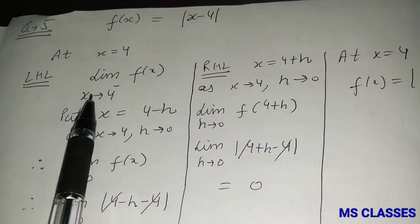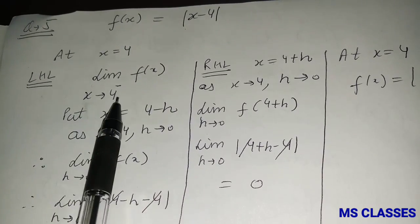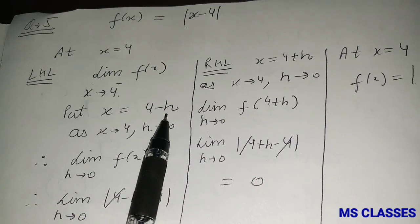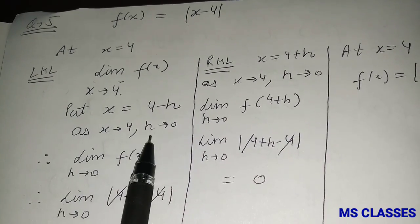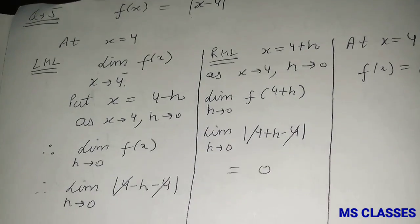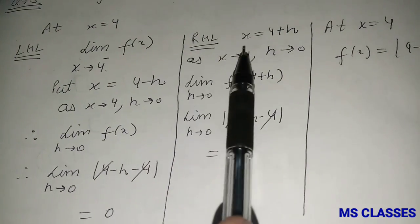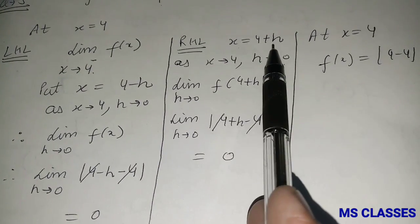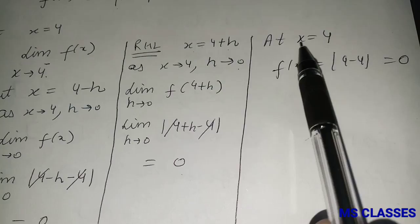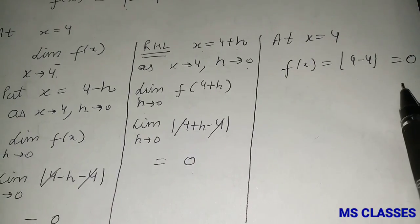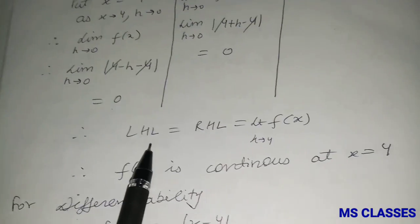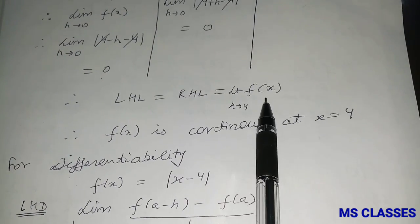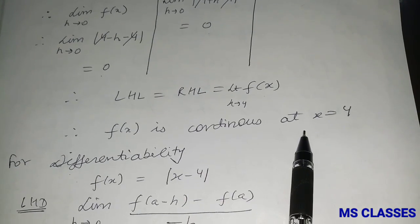For checking continuity at x = 4, we check the left-hand limit first. For x → 4⁻, put x = 4 - h, so as x → 4, h → 0; after substituting we get 0. Similarly, for the right-hand limit, x → 4⁺, put x = 4 + h, h → 0; we get 0. At x = 4, f(4) = 4 - 4 = 0. Since left-hand limit = right-hand limit = f(4) = 0, f(x) is continuous at x = 4.